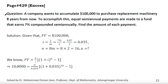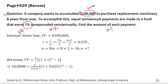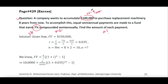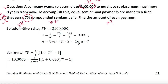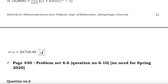Next problem: A company wants to accumulate $100,000 to purchase replacement machinery 8 years from now. Equal semi-annual payments are made to a fund that earns 7% compounded semi-annually. Find the amount of each installment. Here, FV = $100,000, j = 7%, m = 2, and n = 8 × 2 = 16 installments. Using the future value formula, you can calculate the payment A with your calculator.